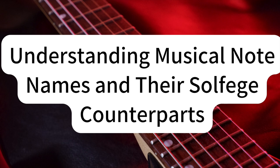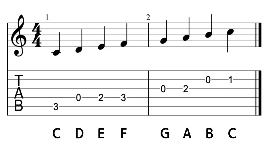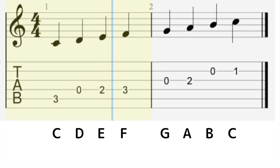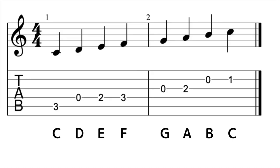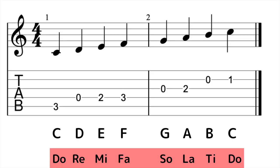Let's start at the very foundation with the names of the notes. In Western music, we have 7 key musical notes: C, D, E, F, G, A, and B. Each of these notes represents a distinct pitch. These notes correspond to the syllables we use in solfège, a method often used for teaching pitch and sight singing. It is the do-re-mi system.